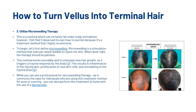The next thing you can do is utilize microneedling therapy. This is a method which falls under scalp stimulation, but it deserves its own section because it's a treatment that is highly recommended. Microneedling uses pin-sized needles to injure the skin — when done right the therapy should be painless. This method works incredibly well to stimulate new hair growth as it triggers a trauma response by the body, resulting in inflammation of the injured skin, proliferation of new skin cells, and remodeling of the injured area. While you can see a professional for microneedling, you can also perform this treatment at home with a derma roller. If you want to claim your free derma roller, there'll be a link in the description.